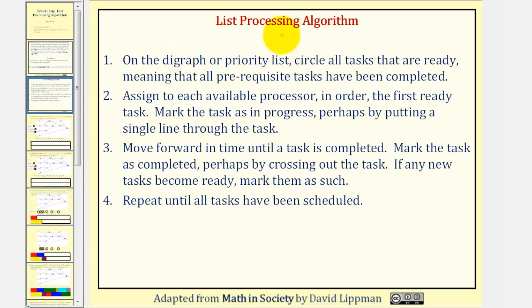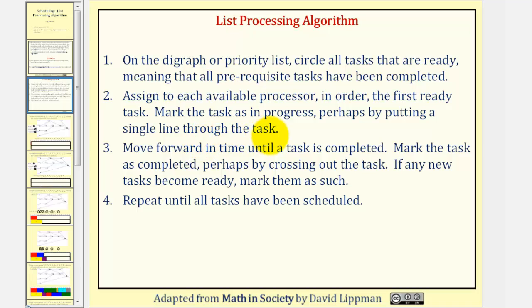Here are the steps for the list processing algorithm. Step one: on the diagram or priority list, circle all tasks that are ready, meaning that all prerequisite tasks have been completed. Step two: assign each available processor in order the first ready task. Mark the task as in progress, perhaps by putting a single line through the task.